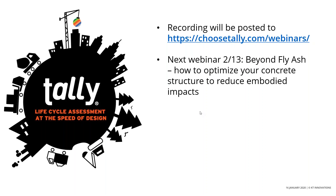We have one question about how often is EC3 data updated. That's something we don't actually know — it really is dependent upon the manufacturer's EPD. Every EPD has an expiration date associated with it, so the EC3 data is a continually growing database, and the longevity of a particular data point is dependent upon that EPD. If there's data you want to see in the EC3 database, it really behooves you to contact the manufacturer and ask them to get it in. EC3 has made that process very streamlined. Essentially, it's updated as frequently as new data becomes available.